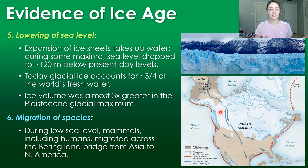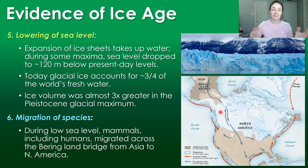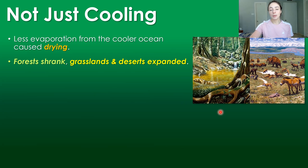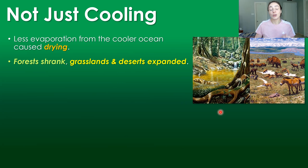I talk a lot more about the migration of species across land bridges during the Neogene period in my Neogene tectonics video, which should be out very soon. Moving past just evidence, let's talk a little bit about how environments were changing during the beginning of this ice age, because it wasn't just cooling — there was also drying.